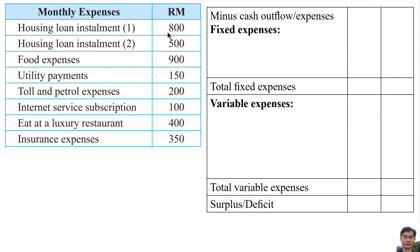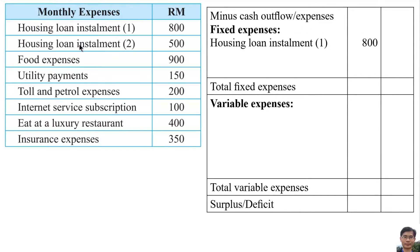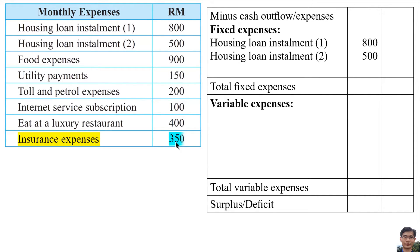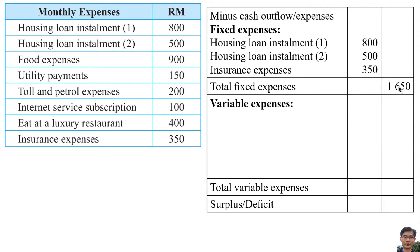Fixed expenses: Housing Loan Installment 1 is RM800, Housing Loan Installment 2 is RM500, and the last fixed expense is insurance, which is RM350. The total fixed expenses is the summation of these three amounts, written on the right side, which is RM1,650.